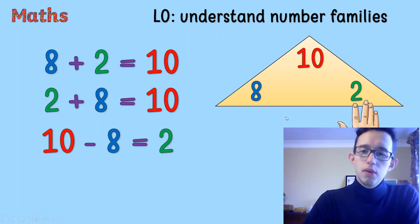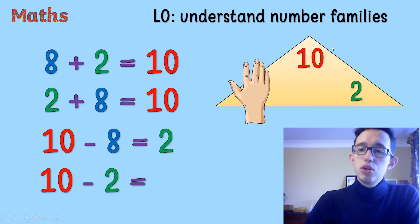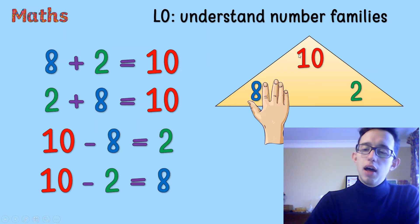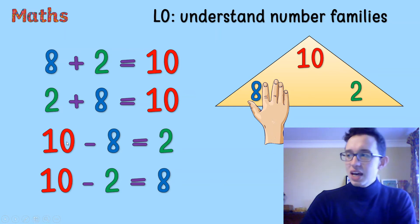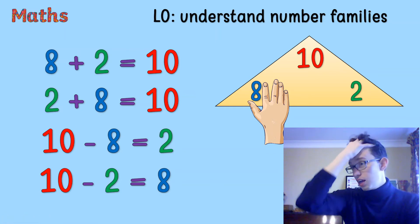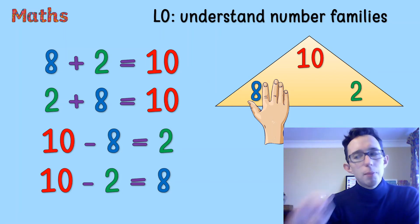And then we can also do 10 take away 2 because those are the numbers that we've used. 10 take away 2 is 8. And it's important that it's 10 because it's the largest number in the takeaways. The biggest number in the takeaway goes first because we take away from that biggest number.